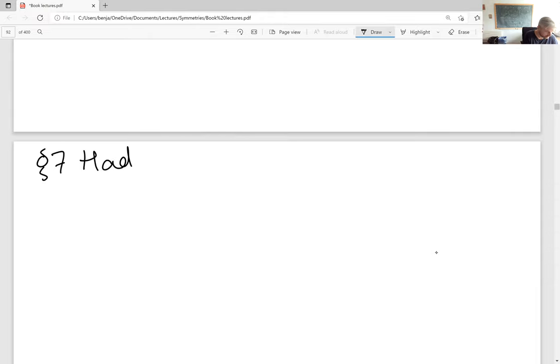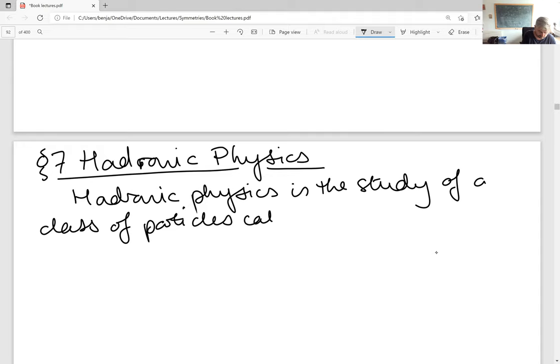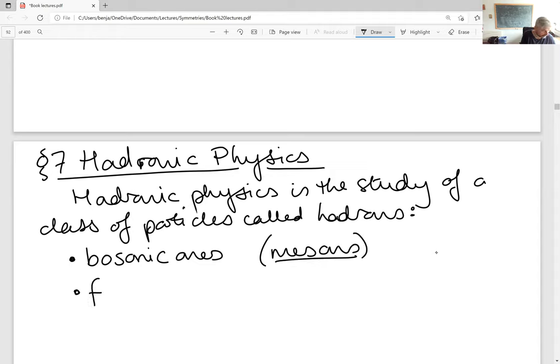Chapter seven: Hadronic physics. Hadronic physics is a study of a class of particles called hadrons. These come in two classes: bosons and fermions. Bosonic ones with integer times H-bar spin are called mesons, and the fermionic ones are called baryons.